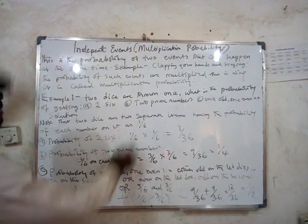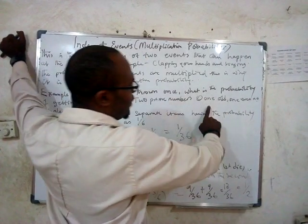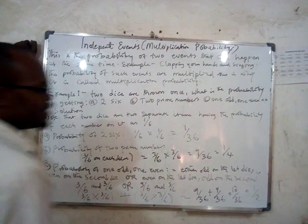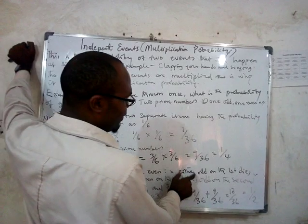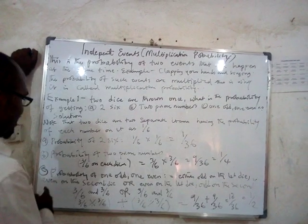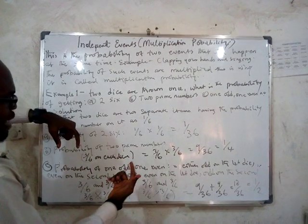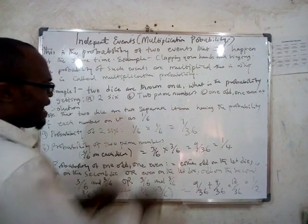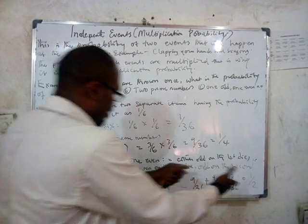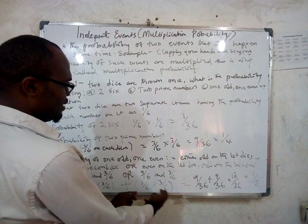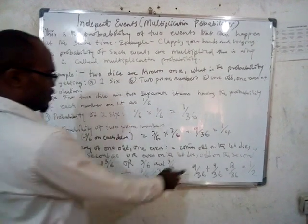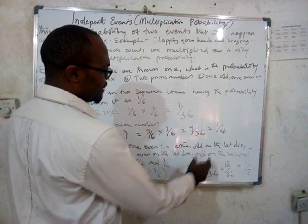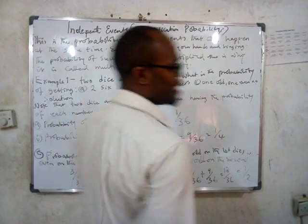So the probability of getting one odd and one even is 18/36, which is the same as 1/2. The two possible situations are: odd on the first die and even on the second die, with probability 3/6 times 3/6 = 9/36; or even on the first die and odd on the second die, also 9/36. Adding them gives 18/36, which equals 1/2.